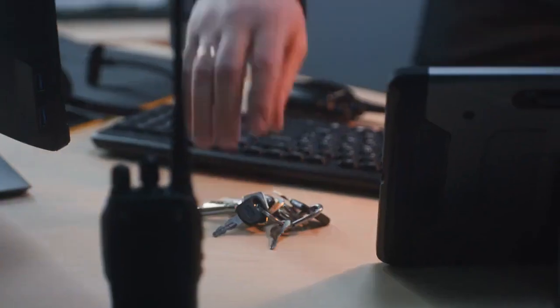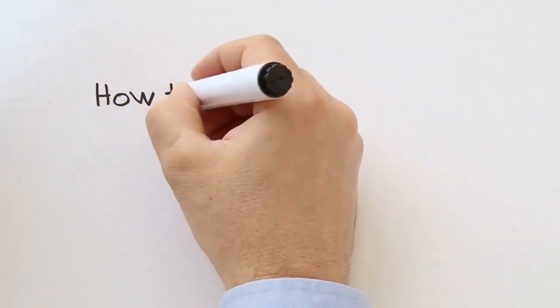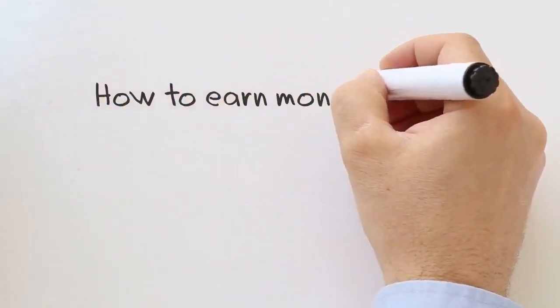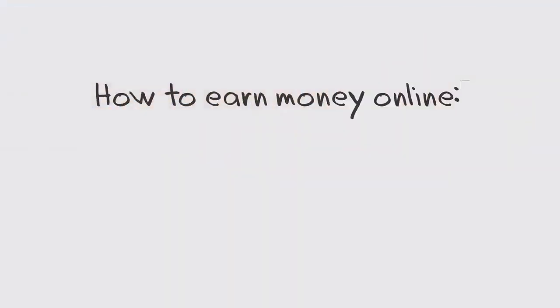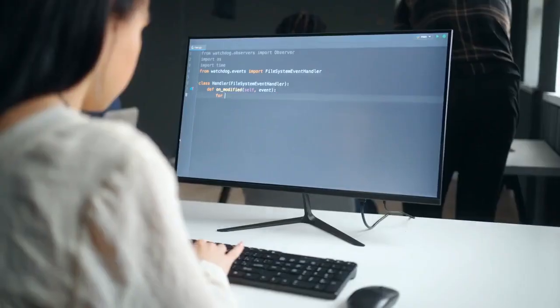2. Getting Started as an Affiliate Marketer. A. Choosing a Niche. B. Selecting Affiliate Programs. C. Building an Online Presence: Website or Blog Creation.